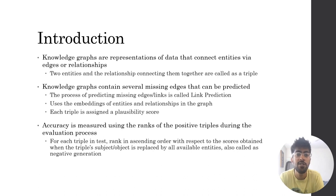To get started, let's talk about knowledge graphs. Knowledge graphs are a representation of data that connect entities via edges or relationships. Knowledge graphs contain several missing edges that can be predicted, and this process of predicting them is known as link prediction. Link prediction uses the embeddings of entities and relationships in the graph, and each triple is assigned a plausibility score that indicates how true it is based on these embeddings.